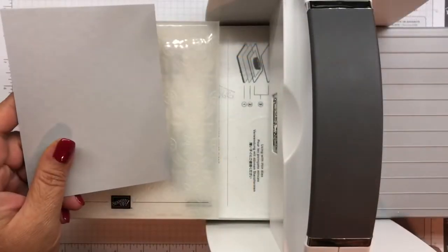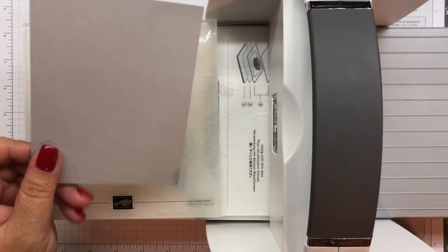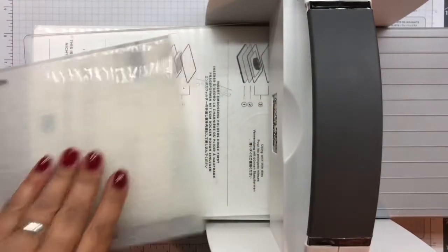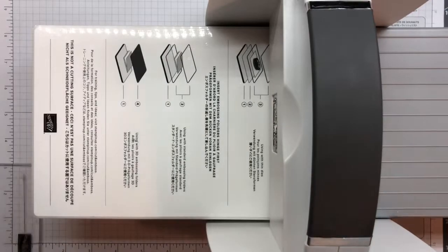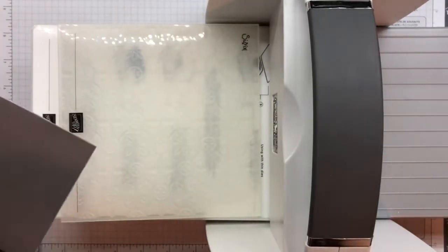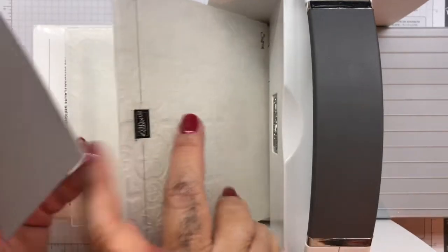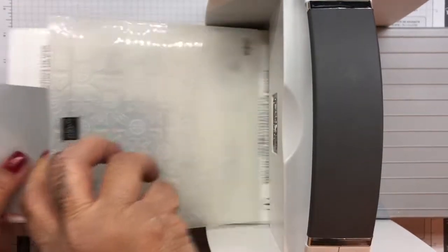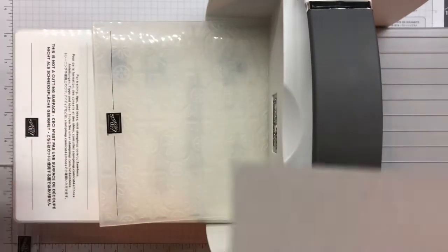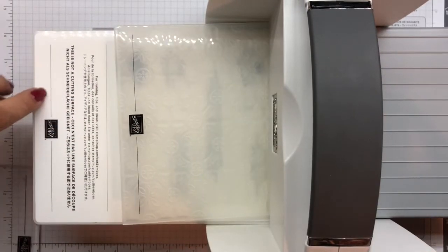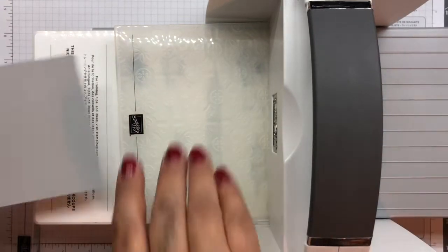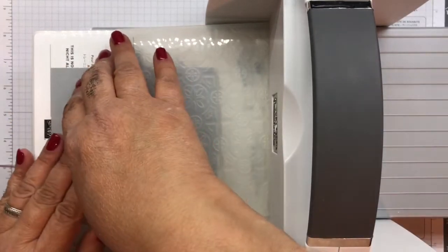So the first thing we're going to do is we're going to get out our piece of Smoky Slate. And this is cut at 4 by 5 and a quarter. And we've got our Stampin' Cut Emboss Machine. And we've only got plate one because this is a 3D embossing, textured embossing. And I'm going to bring this up. And how I'm going to do this is I'm going to put this in here a little bit. And I'm going to take this end and I'm going to line it up with this line right here. I hope you guys can see that. That's how I'm going to measure it.